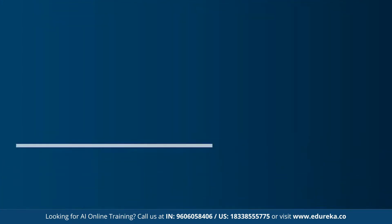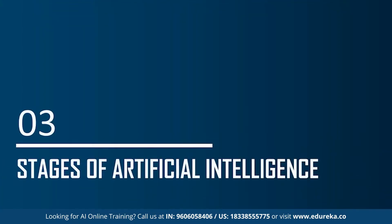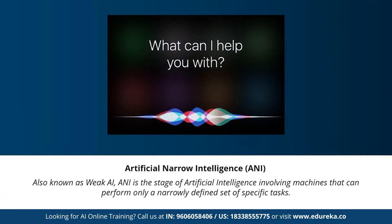Now let's understand the different stages of artificial intelligence. Many articles state that artificial general intelligence, artificial narrow intelligence, and artificial super intelligence are the different types of AI — but to be more precise, these are the three different stages of AI. The types of AI are completely different from the stages of AI. Under the stages, we have artificial narrow intelligence, artificial general intelligence, and artificial super intelligence.